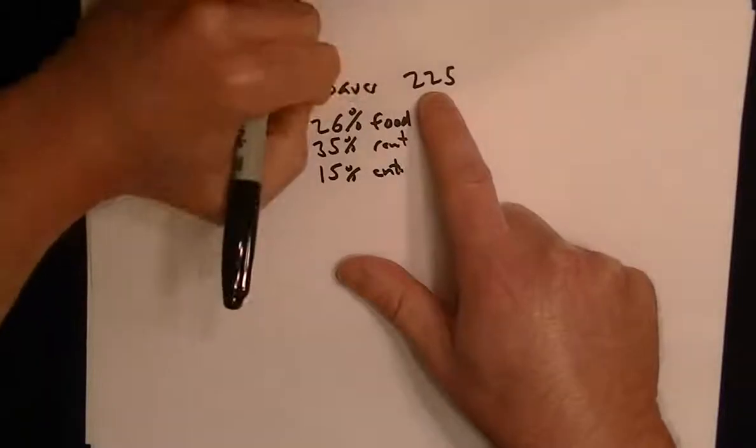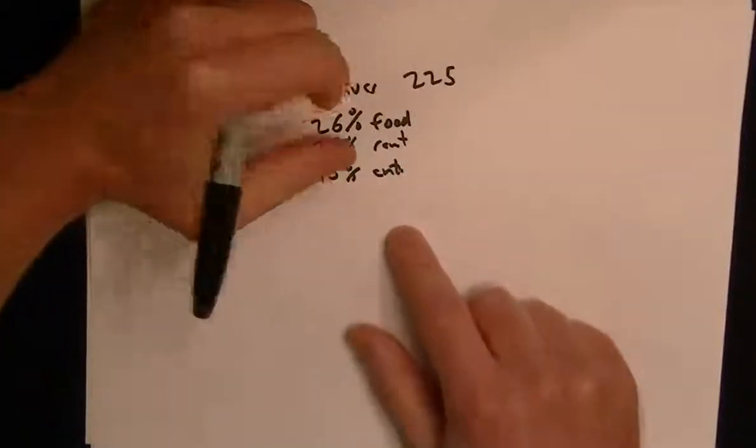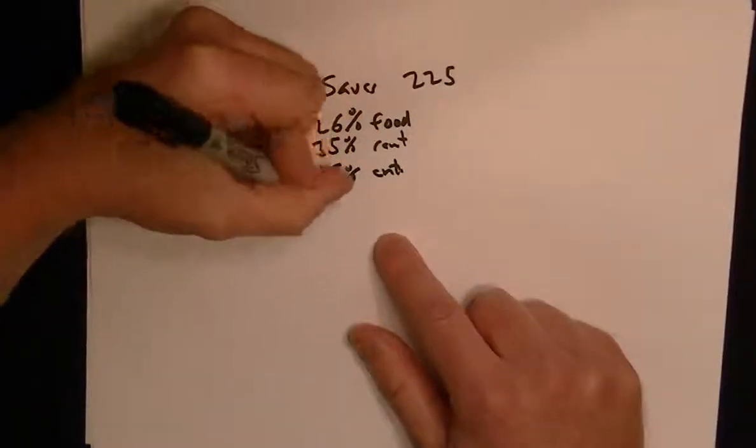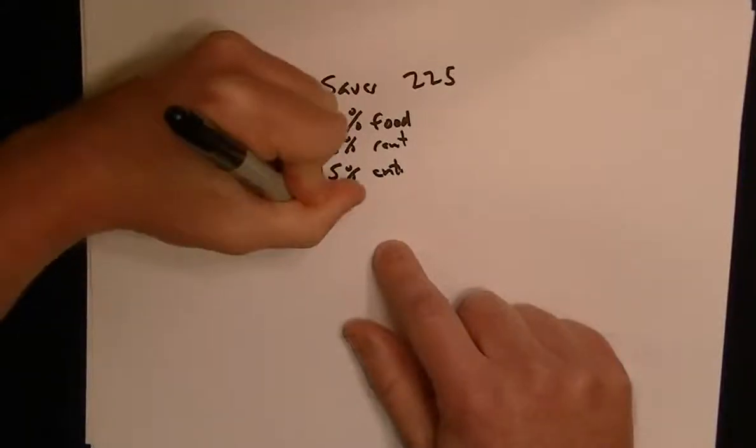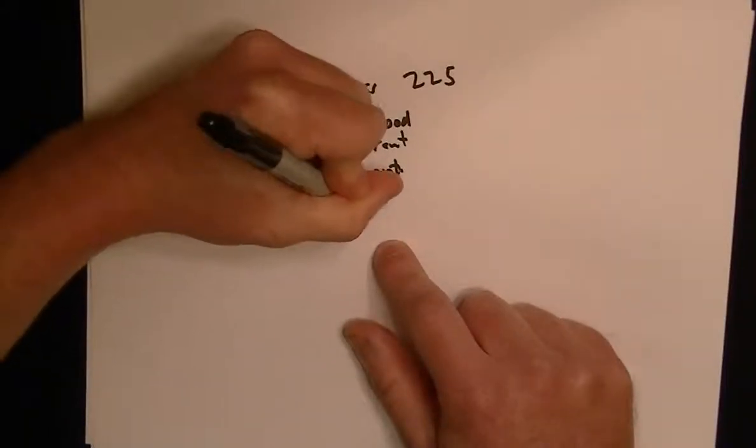So we know how much he saves, but we have to find out how much he makes in total. So first, you have to add up his total percentage expenditures.